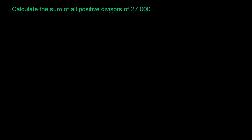Calculate the sum of all positive divisors of 27,000. The easiest thing that I can think of doing is first take the prime factorization of 27,000, and then that'll help us structure our thought of what all the different divisors of 27,000 would have to look like.